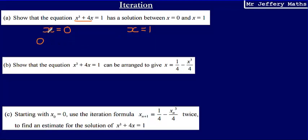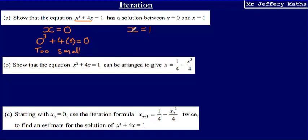Substituting x equals 0 into x cubed plus 4x gives 0 cubed plus 4 times 0, which equals 0. Since we want the result to equal 1, this is too small. Substituting x equals 1 gives 1 cubed plus 4 times 1, which equals 5. That is too large.